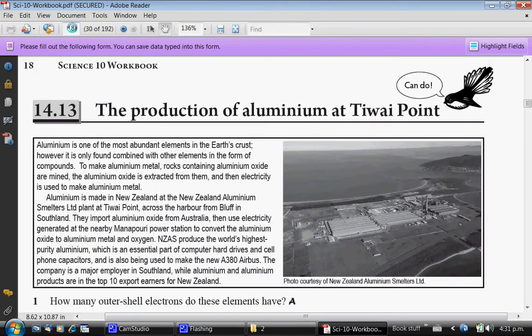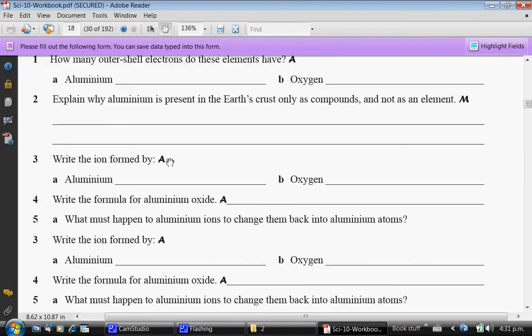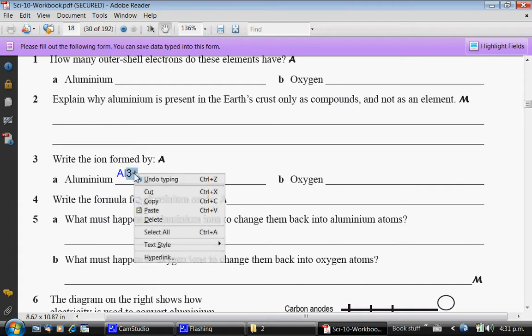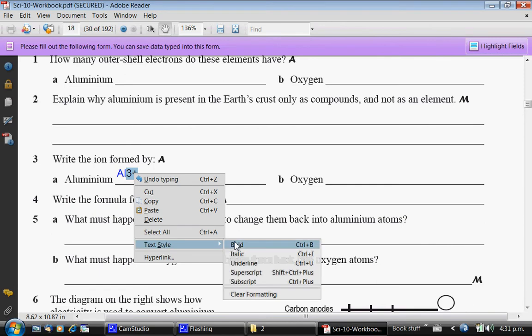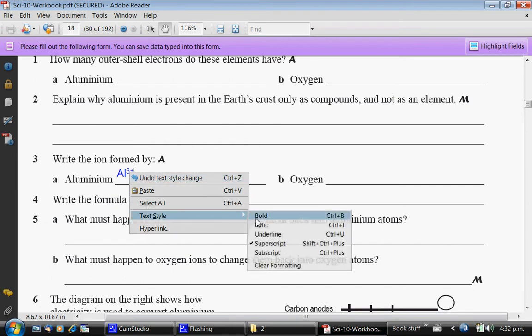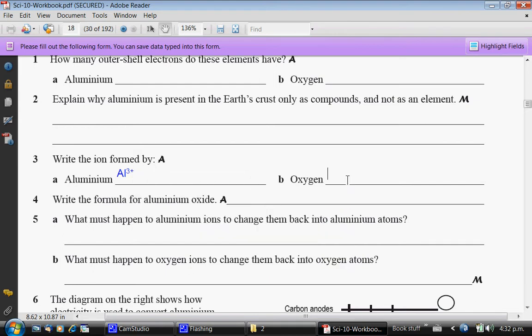If you need to do some chemistry, and you need superscripts and subscripts, then the fields have been turned into rich text fields. So, to get a superscript, you select the text and then right click on it, and superscript. Or, alternatively, there are quick keys, which you can see here for the various style options, and they are the standard Windows quick keys.